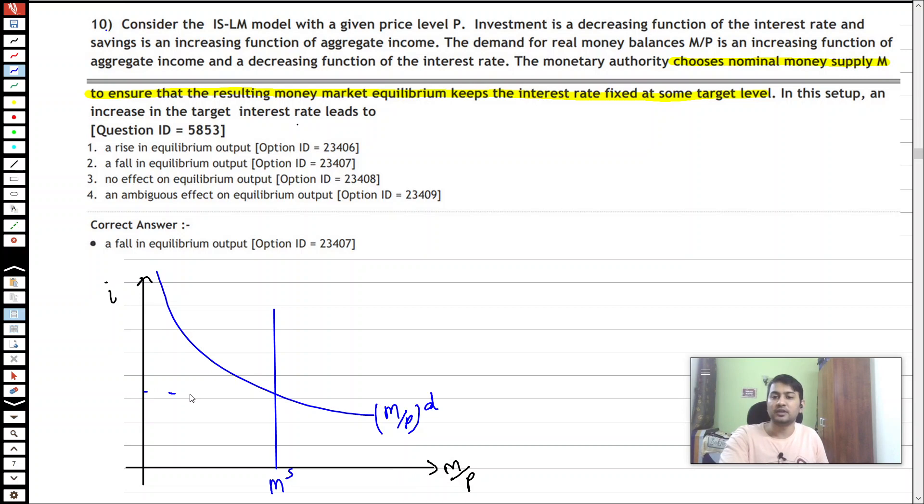We have a fixed interest rate of I naught. Now, if it wants to increase the target inflation, what it needs to do is reduce the real money supply M bar. So it reduces money supply to M bar.